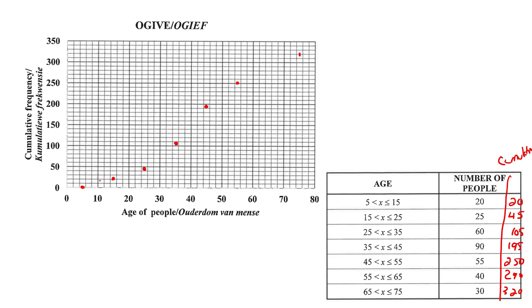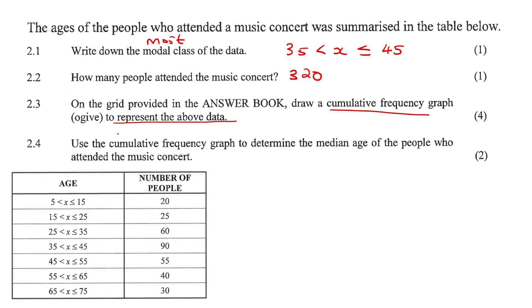Once you've drawn all of them, now you're just going to try to connect them, not as a straight line. Remember, an ogive is like a curve, so it usually makes that kind of S curve. Now if I'm just going to quickly go back to the previous questions, they say on the ogive draw a cumulative frequency. We've done that.